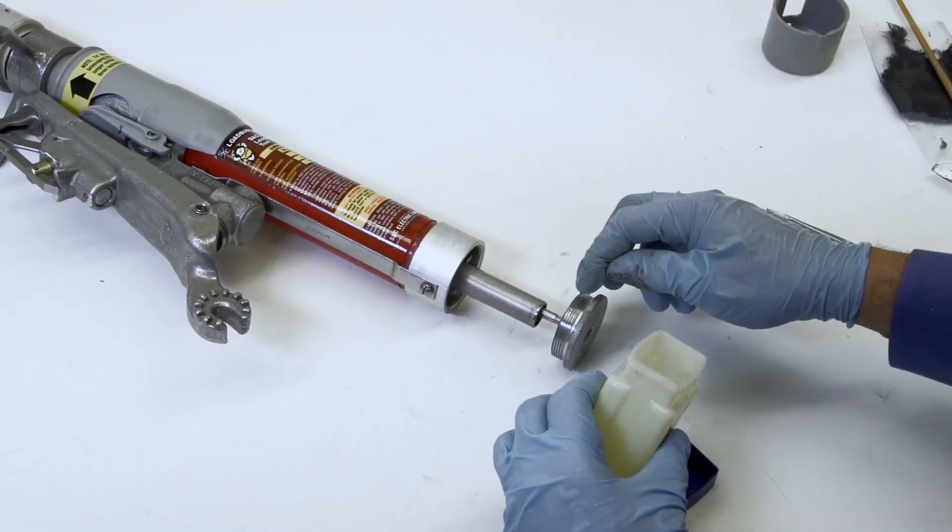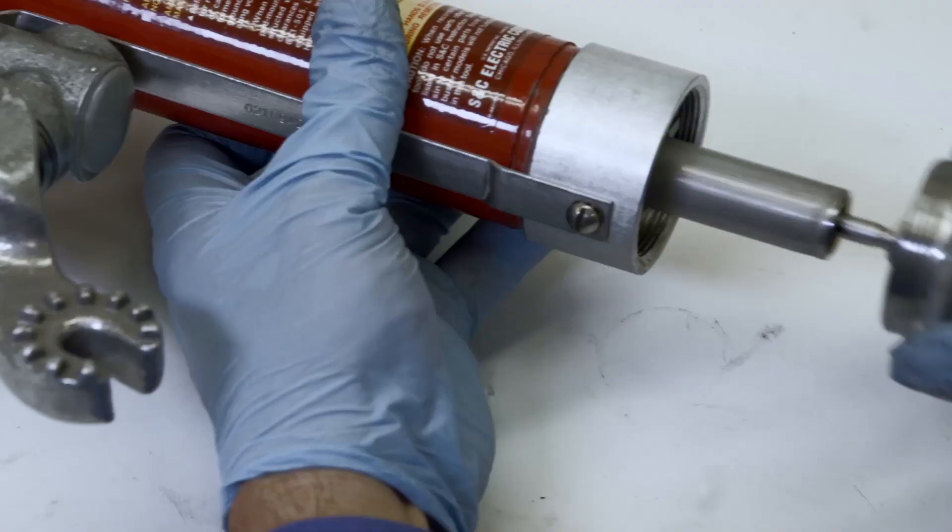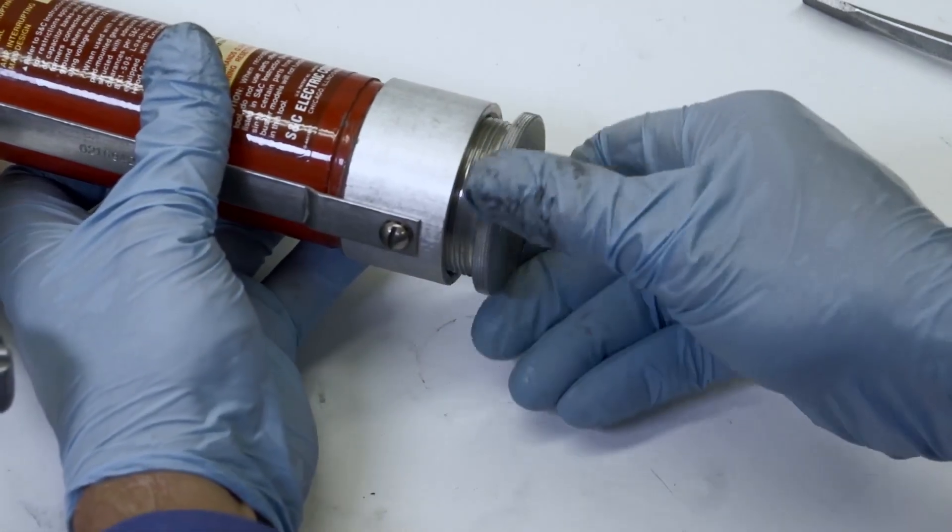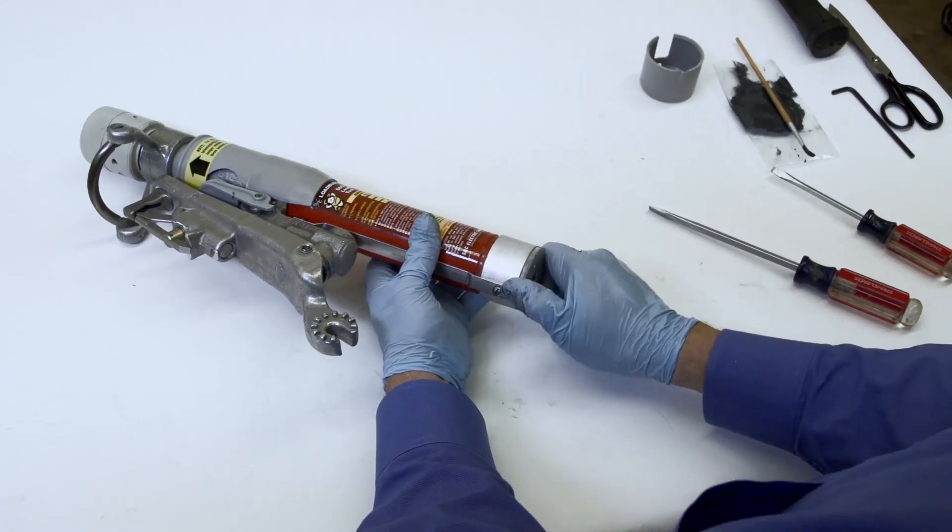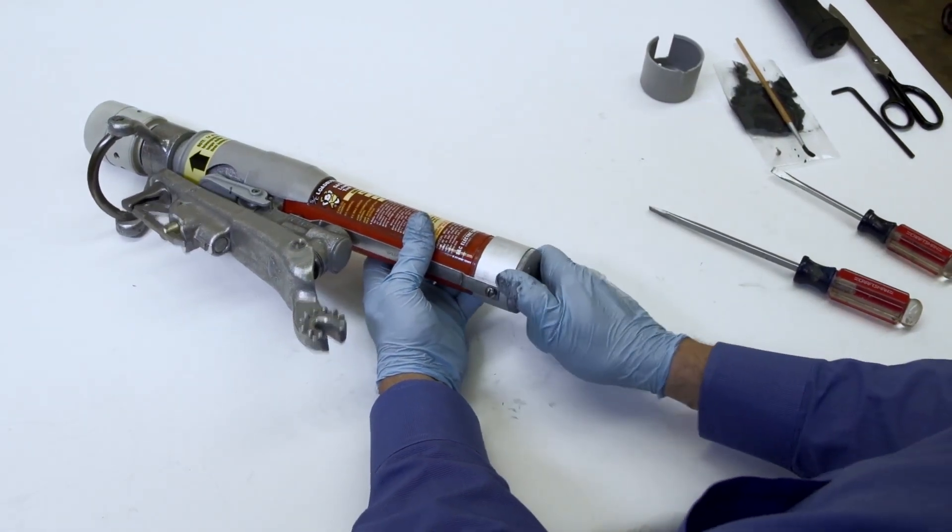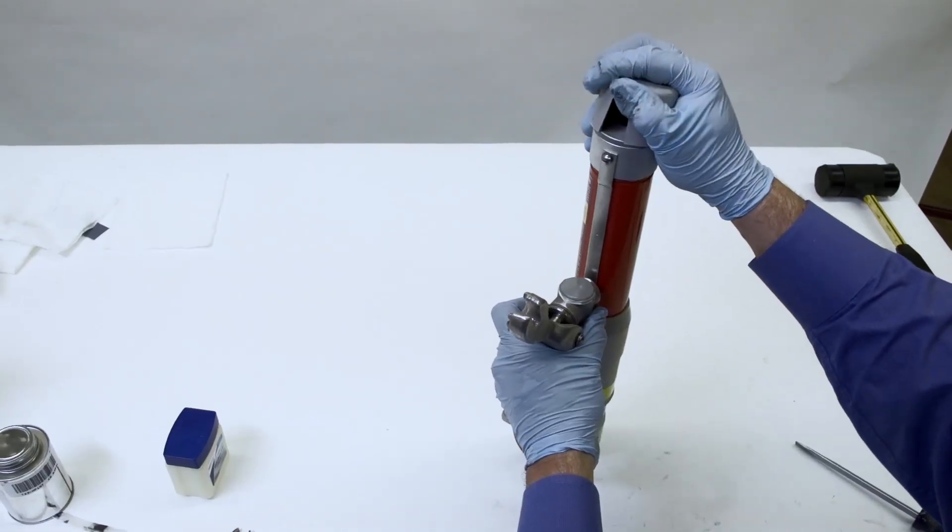Apply a light coating of petroleum jelly to the threads of the end cap and screw the end cap firmly onto the chassis. Install the tube cover.